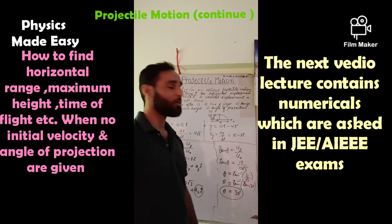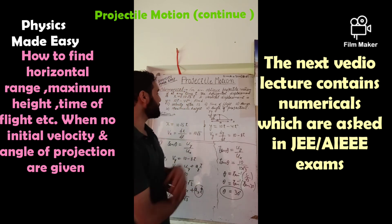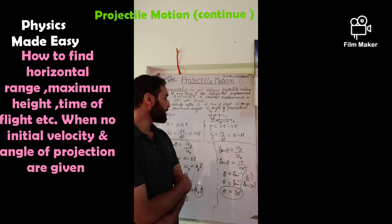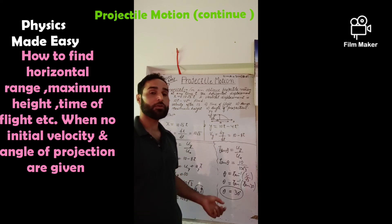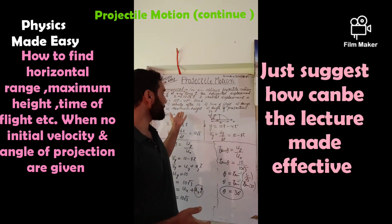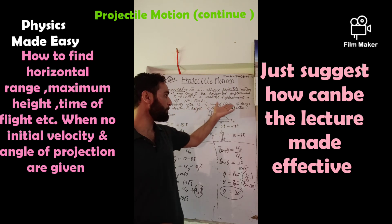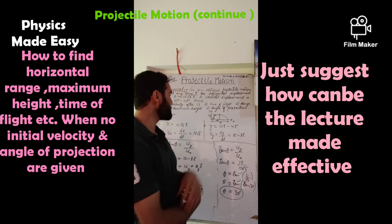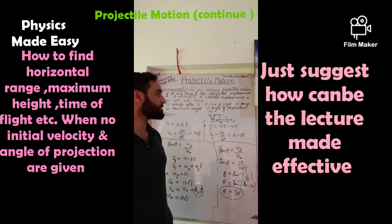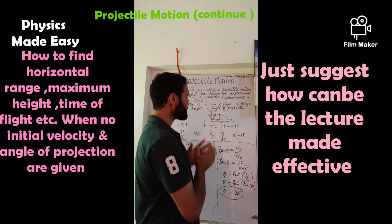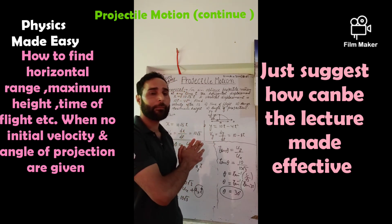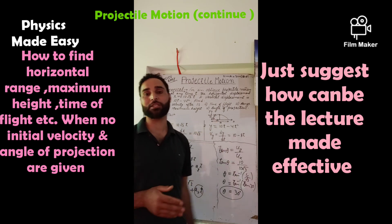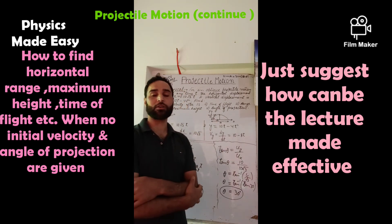In such questions where initial velocity and angle of projection are not directly given, we cannot use the standard formulas for time of flight, maximum height, and horizontal range. Instead, we solve using an alternate method by differentiating the displacement equations. These are called conceptual questions.